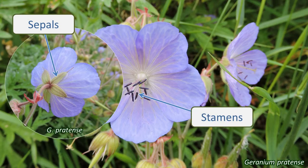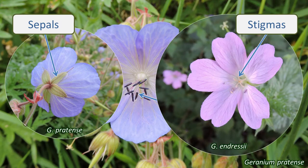The stamens are in multiples of five — most often there are ten, arranged in two whorls of five. The five carpels, which will become the fruit and bear the seeds, are joined together into a beak shape. Although they're joined, the stigmas of the flower give them away — there are five. The ovaries of the carpels are superior, which means they are attached above the rest of the floral parts: the stamens, petals and sepals.